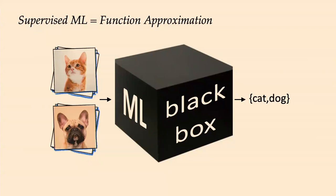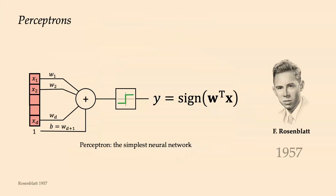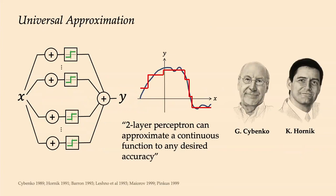Consider supervised learning: distinguishing images of cats and dogs. You provide vectorized images, feed them into a black box, and produce a binary label. It's a glorified function approximation — fitting a function from a few sample points that also generalizes. The obvious candidate since the late 1950s was artificial neural networks like the perceptron, designed by Frank Rosenblatt. Mathematically, neural networks are very generic: the universal approximation theorem tells us two layers can approximate any continuous function to any desired accuracy.